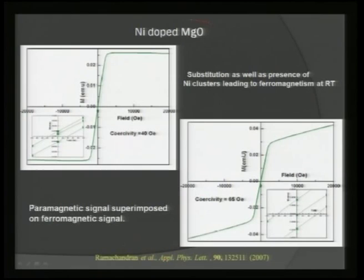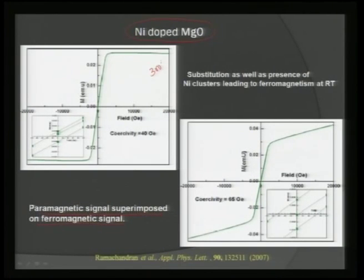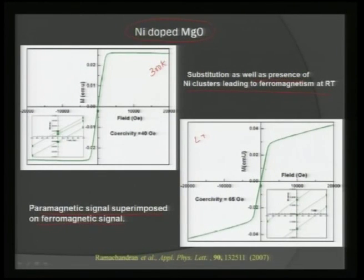Another example with wide band gap material MgO (band gap above 4 eV) doped with nickel shows a paramagnetic signal superimposed on the ferromagnetic signal — seen at 300 K and at low temperature. Both substitution and the presence of nickel clusters lead to ferromagnetism at room temperature. At the macroscopic level the magnetic feature looks like a strong ferromagnetic signature, but probing carefully at low temperatures reveals a paramagnetic signature coupled with the ferromagnetic one. If you plot magnetization versus temperature, a sudden upsurge in magnetic moment at low temperatures indicates this is due to paramagnetic behavior from substitution. Reported by Ramachandran in 2007.